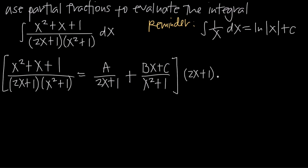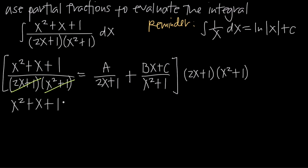We multiply by 2x plus 1 times x squared plus 1. When we multiply both of these factors by the left-hand side, the entire denominator cancels because this 2x plus 1 will cancel with this 2x plus 1, leaving us with just x squared plus x plus 1 — the numerator from the left-hand side. Then over here, when we multiply both factors by A divided by 2x plus 1, the 2x plus 1 cancels, leaving us with just A times x squared plus 1.